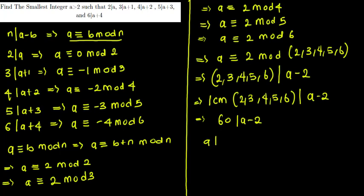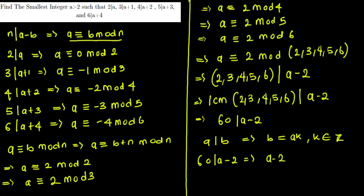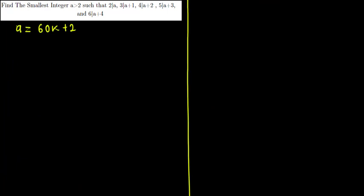Since if d divides b then b equals dk for some integer k, we have that 60 divides a minus 2 implies a minus 2 equals 60k, so a equals 60k plus 2. From the problem, a must be greater than 2.